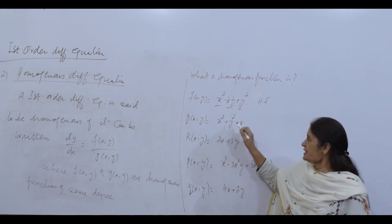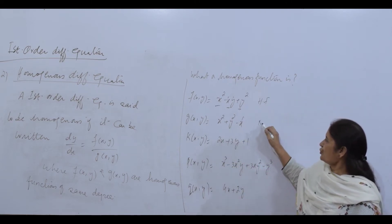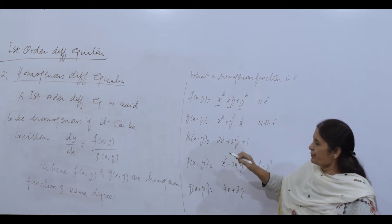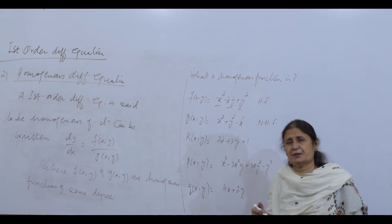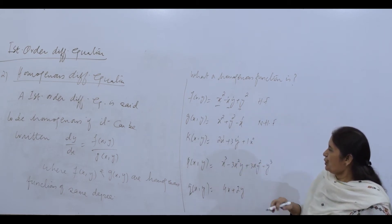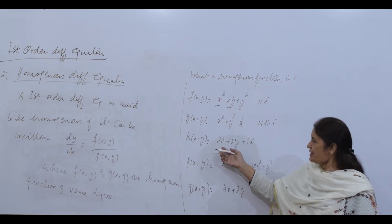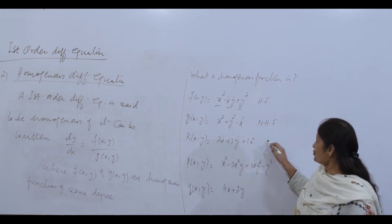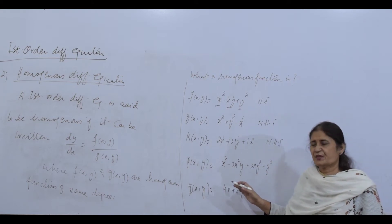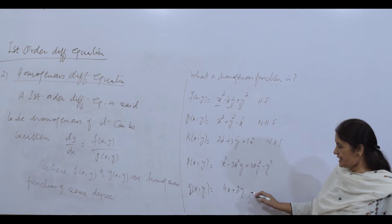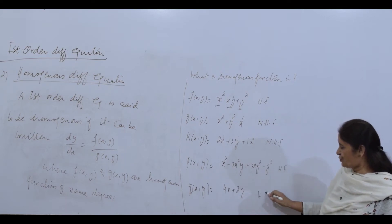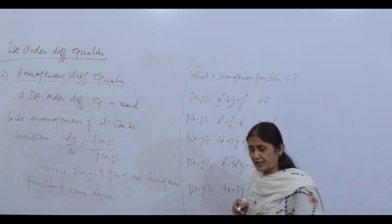Looking at 2x + 3y + 1: degree is 1 for x and y terms, but the constant 1 is degree 0, so it is non-homogeneous. The function x³ − 3x²y + 3xy² − y³ has each term of degree 3, so it is a homogeneous function. Similarly, 4x + 2y is a homogeneous function of degree 1.